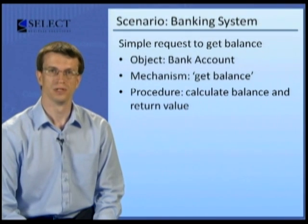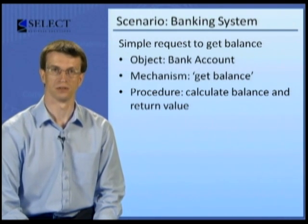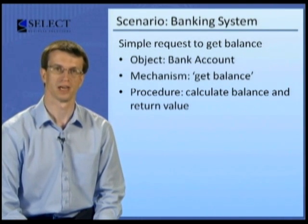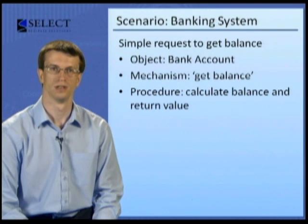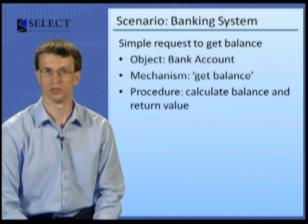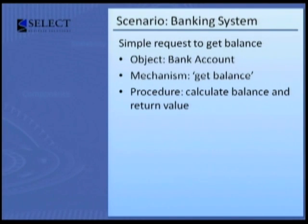In a very simple example, someone might use a software system to emulate something in the real world. They might go to their bank account and request its balance. This requires there to be an object which represents the bank account. It requires a mechanism on the object for making the request — get balance. And it requires that the bank account object which receives the message carries out whatever procedures are necessary to calculate the balance and then returns the value to the person who requested it. So we can see that the software engineering and the software technology which you are using to engineer the system is required to handle the incoming message and return the information as if it were a real object.